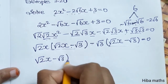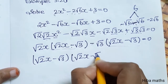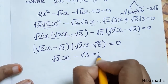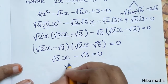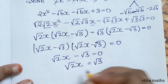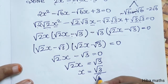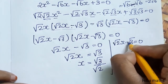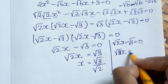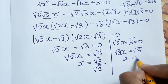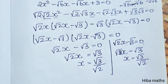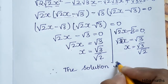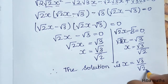So √2x - √3 = 0, and x order value is equal to 0. Therefore √2x - √3 = 0, which gives x = √3 / √2. The solution is x = √3 / √2.